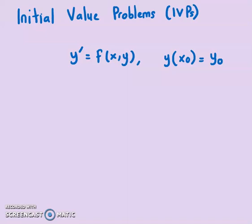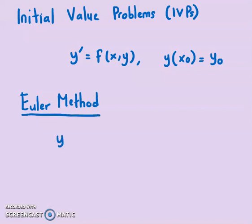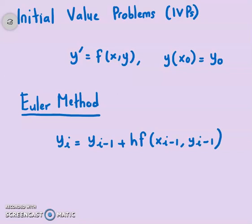There are many ways to solve this, but now we're going to look at the Euler method. The Euler method is a one-step method of order one. The Euler method is given by: y_i equals y_{i-1} plus h times f(x_{i-1}, y_{i-1}). The Euler method can be derived by Taylor series expansion of order one. Here, f is the given function for y-prime equals f, and h is the step size.